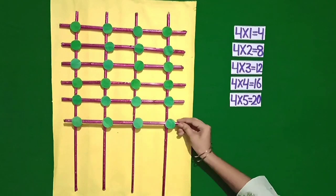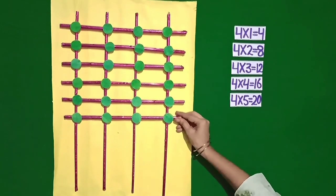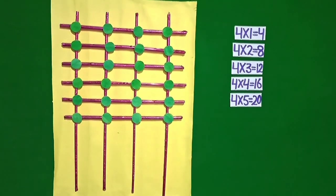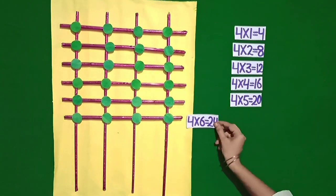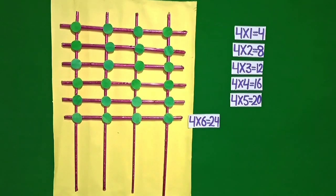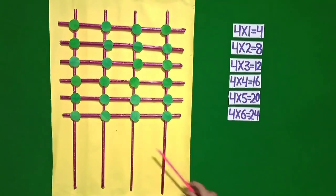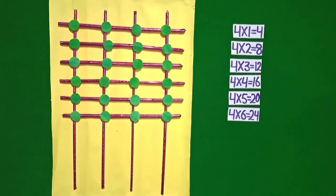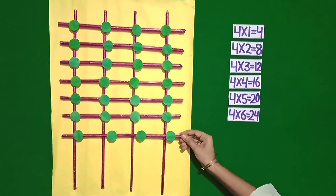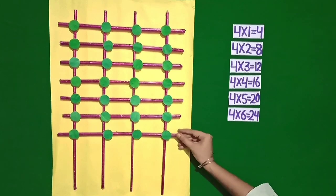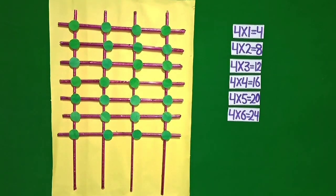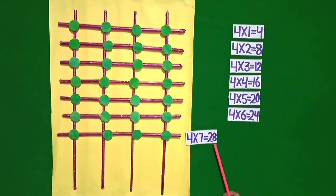Students, now I am putting the 6th stick in horizontal position. Students, how many intersection points are there? Yes, there are 24 intersection points. It means 4 sixes are 24. Now I am putting one more stick in horizontal position and they have become 28 intersection points. It means 4 sevens are 28.